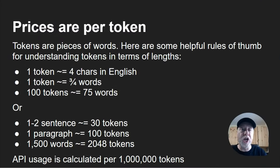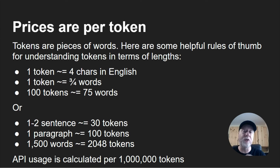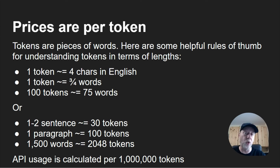All these APIs are priced per token. So what is a token? A token is not a word — it's part of a word. That's because of how the LLM learns from text. For example, it might have the word shop, shops, shopping — three different complete words that all have 'shop' at their root, and it predicts what comes next. A token is about four characters in English, or three-quarters of a word. A hundred tokens is about 75 words. One or two sentences is about 30 tokens, a whole paragraph is about 100 tokens, and 1,500 words is about 2,048 tokens.